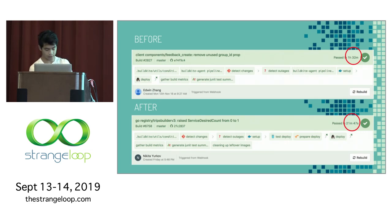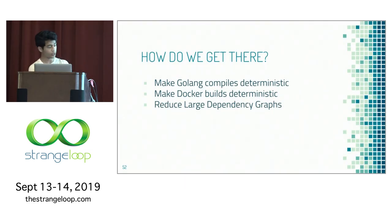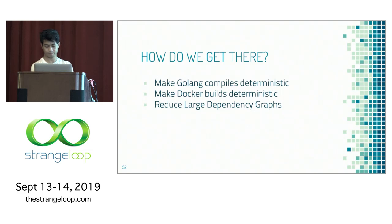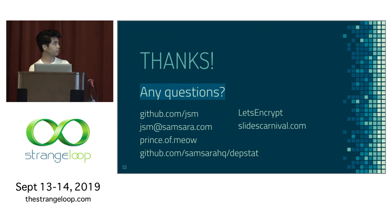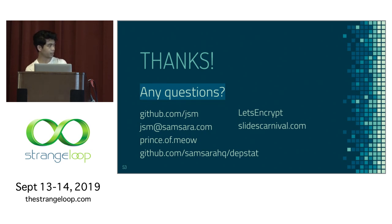To summarize: the first step was making Go compiles deterministic, the second step was making Docker builds deterministic, and the third step was reducing large dependency graphs. I'm on github.com/jsm, jsm@samsara.com, my cat's Instagram is prince.of.meow, and the depstat code will be at github.com/samsarahq/depstat. Thanks to Let's Encrypt for notes on deterministic Go and Slides Carnival for slide templates.